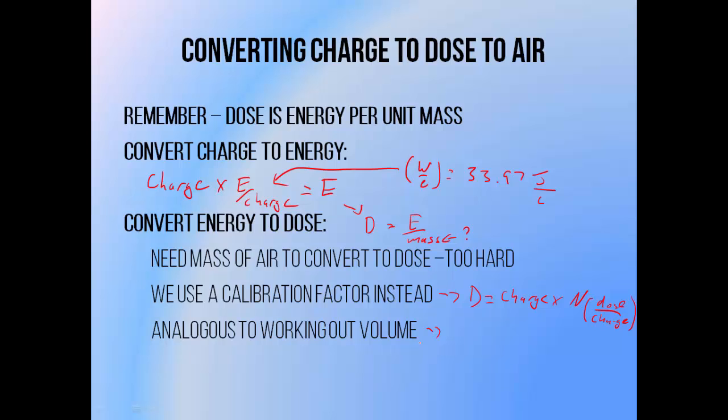Converting a cobalt-60 appropriate calibration factor to one that's applicable to our own beams is the main reason why we need dosimetry codes of practice, like TRS-398. I'm going to be covering how we can use a dosimetry code to do this in a separate video.